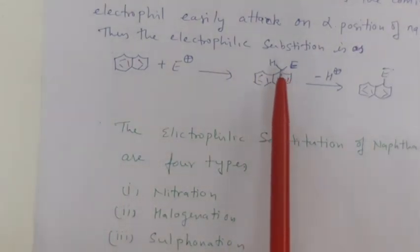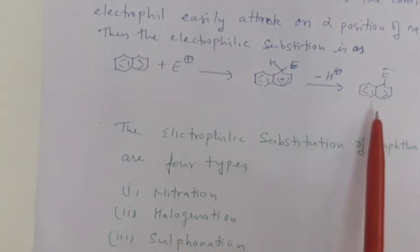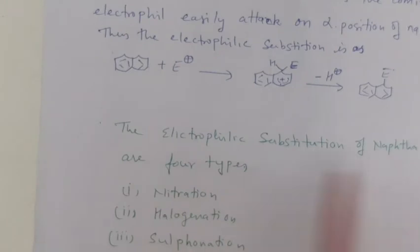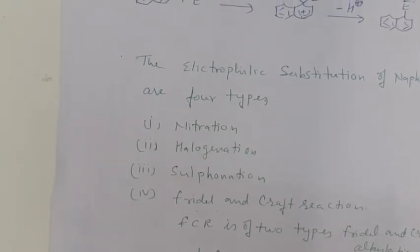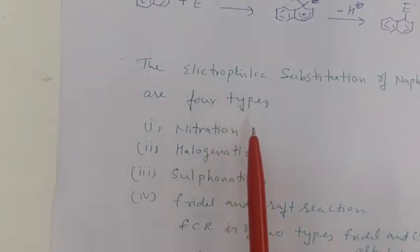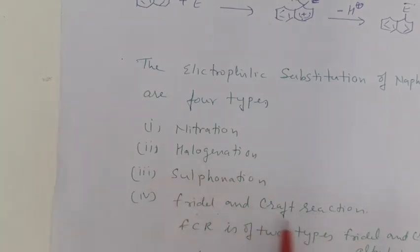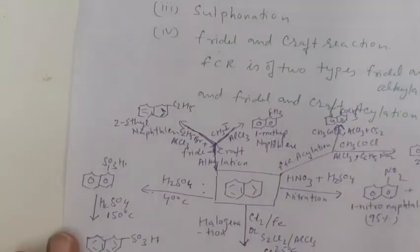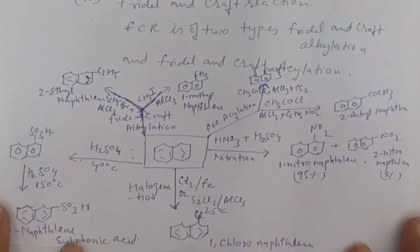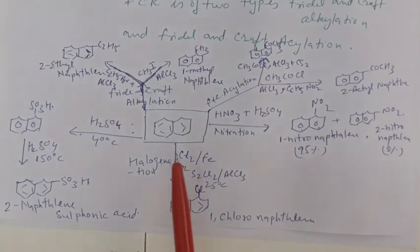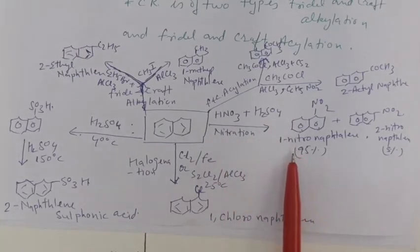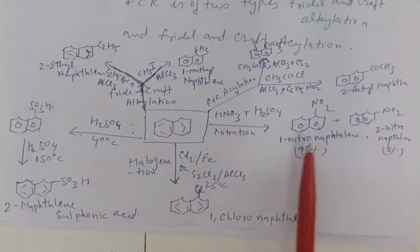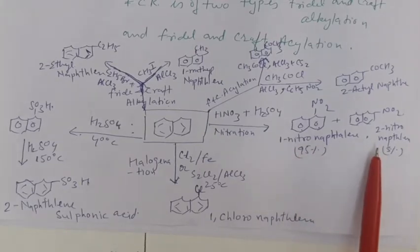The arenium ion at the alpha position then eliminates a proton to give the alpha-substituted naphthalene. The electrophilic substitutions of naphthalene are of four types: nitration, halogenation, sulfonation, and Friedel-Crafts reaction. Friedel-Crafts reactions are of two types: alkylation and acylation. Naphthalene with concentrated nitric acid and sulfuric acid undergoes nitration to give 1-nitronaphthalene (95%) as the major product and 2-nitronaphthalene (5%) as the minor product.